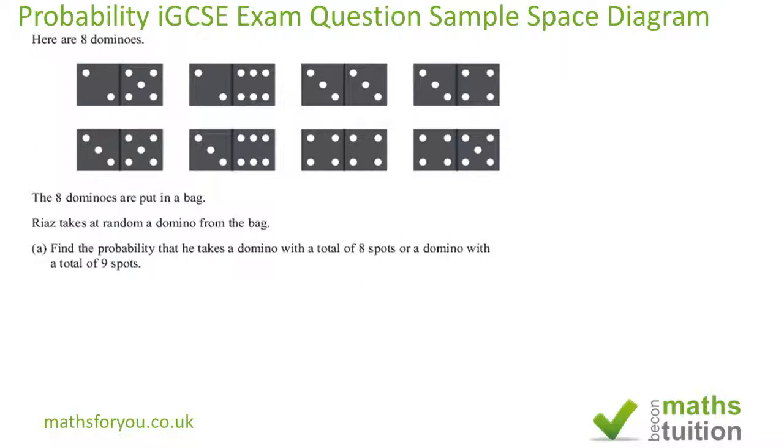Okay, now we are asked to find the number of dominoes with 8 spots or with 9 spots, so the OR means that we are going to add probabilities. So for 8 spots we got 1, 2, and 3, that's 3 over 8. And for 9 spots we got 1 and 2, that's 2 over 8. Therefore for 8 or 9 we are going to have 3 over 8 plus 2 over 8 and that gives us 5 over 8 and that should be the answer.